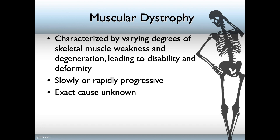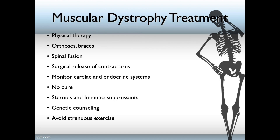Another important musculoskeletal problem is muscular dystrophy. This is characterized by varying degrees of skeletal muscle weakness and degeneration, which leads to disability and deformity. It can be either slowly or rapidly progressive, and the exact cause of muscular dystrophy is not well known. Treatment includes physical therapy, the use of orthoses or braces, and in some cases, particularly for the ruptured vertebrae, surgical fusion may be needed.